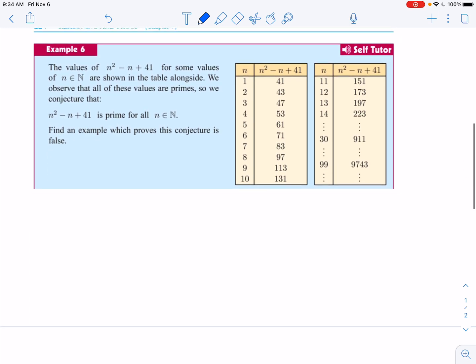So on this particular problem, they say the values of n squared minus n plus 41 for some values of n element of the natural numbers are shown in the table. So they give you this, and then they say, okay, so look at all of these numbers, we've got all these prime numbers, life is grand, therefore it must be prime for all the time.